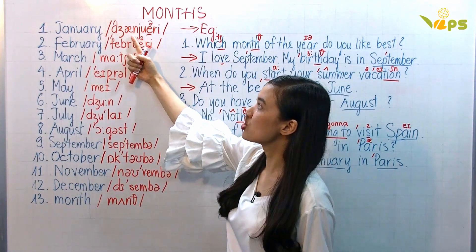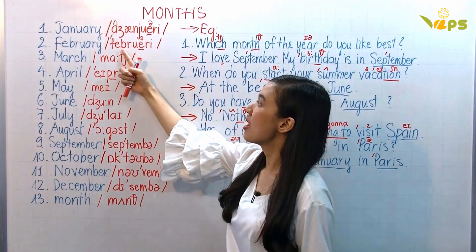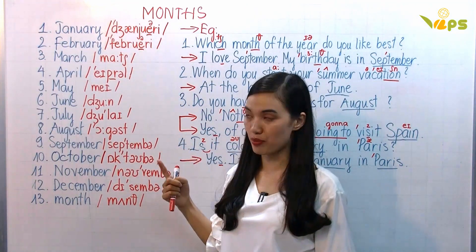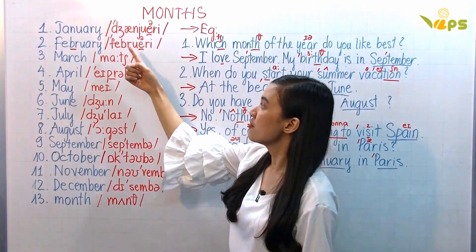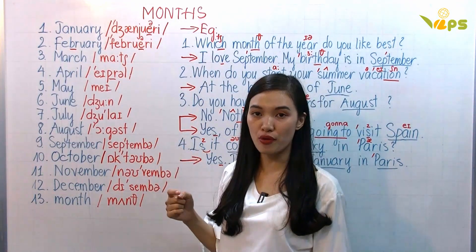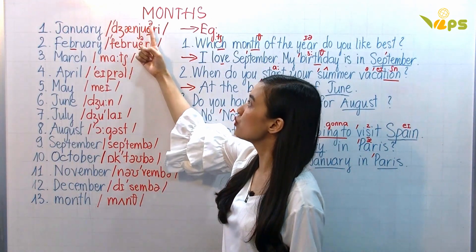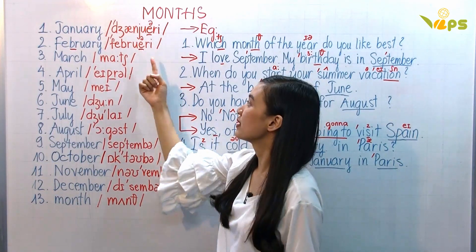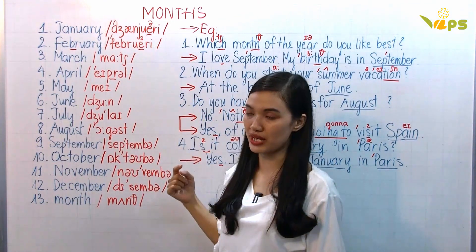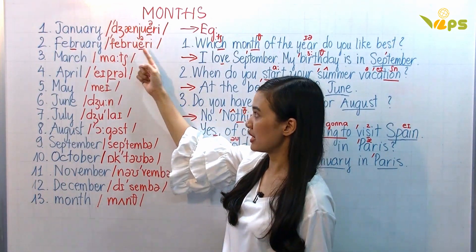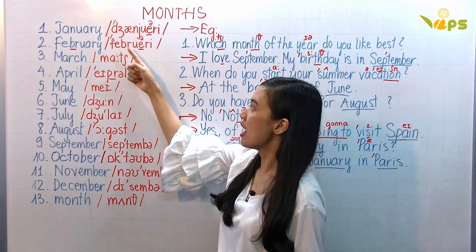First: January. February — remember this is 'brr,' a consonant cluster. February. In American English we say January and February. In British English, we say January and February.